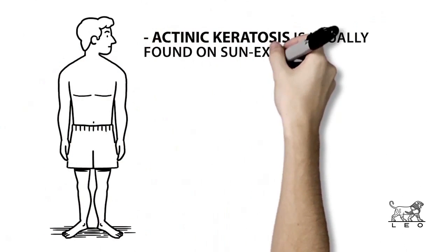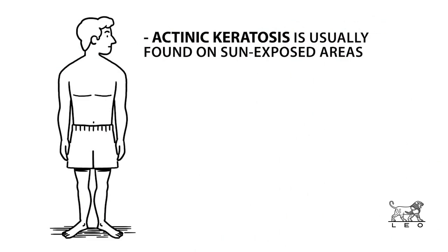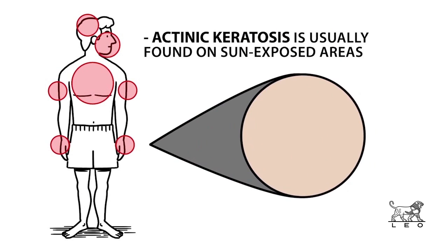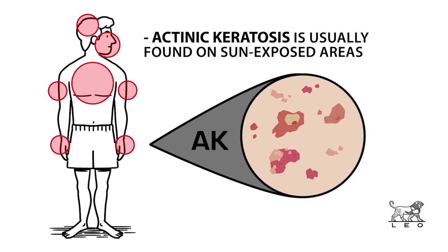actinic keratosis is usually found on sun-exposed areas such as the face, scalp, chest, arms and back of hands. It can be red, brown or no color at all and can appear as a single lesion or as multiple lesions grouped together.